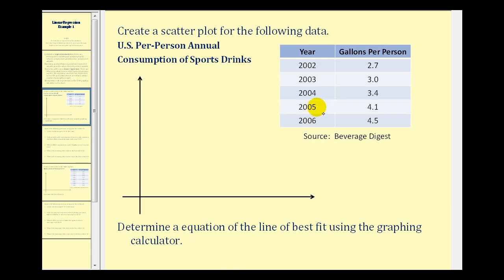Here we're given a set of data that compares the year to the per person annual consumption of sports drinks. So our first column is the year and our second column is the number of gallons per person. The first step to analyzing data is to create a scatter plot of the data to see what type of function would be a good model for the data.